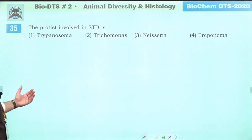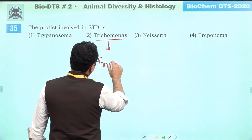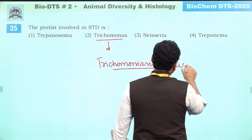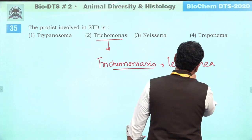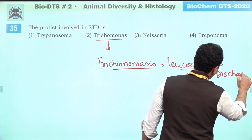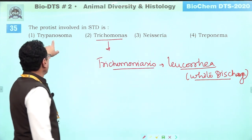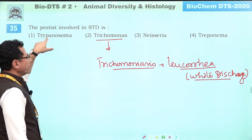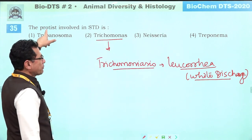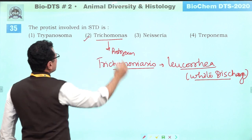The protist involved in sexually transmitted diseases causes trichomoniasis, which causes leucorrhoea (white discharge from vagina). Neisseria and Treponema are bacteria. Trypanosoma is a flagellated protozoan not involved in any STD. We are asking about a protist. The protist causing STD is Trichomonas. Answer is second.